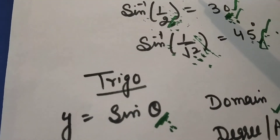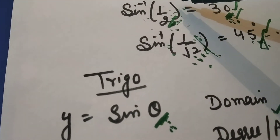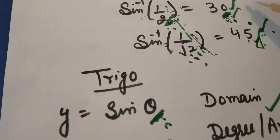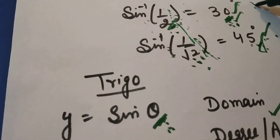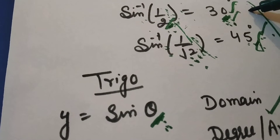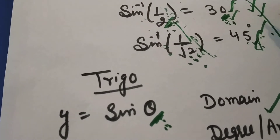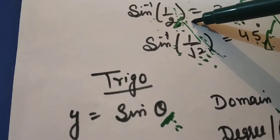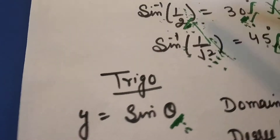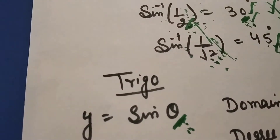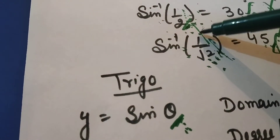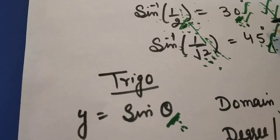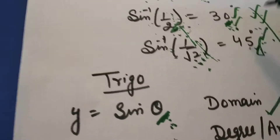So in this inverse case, we input values and get angles as the answer. The domain and range are swapped: in inverse trig, the range becomes the domain, and the domain becomes the range.